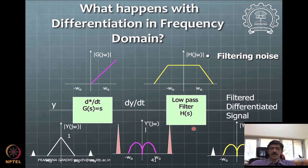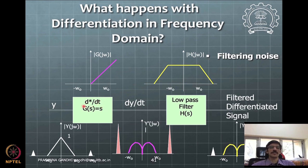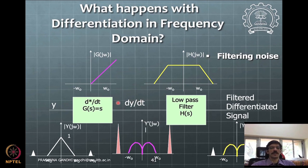Sources of noise are not only ambient sources — mathematical operations like differentiation can also enhance noise already present in the signal. We have been discussing ideal differentiation here; with forward or backward difference formulas there is a different form. We treat the system as continuous-domain and note that conclusions are approximately valid when the sampling time is appropriate for the discrete domain.